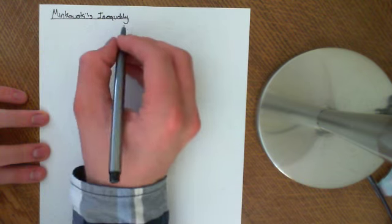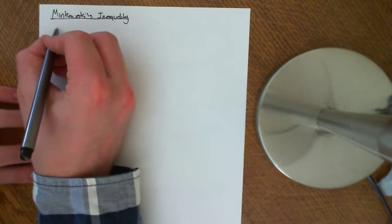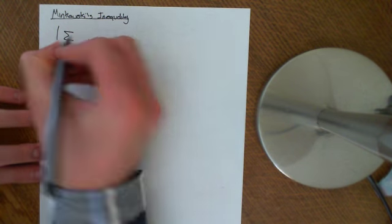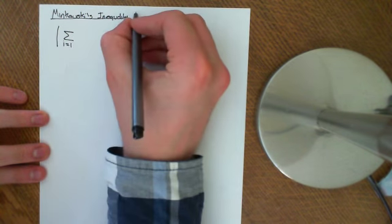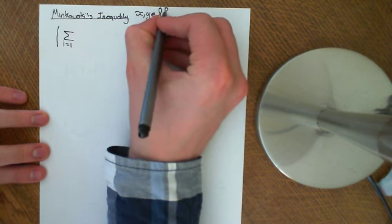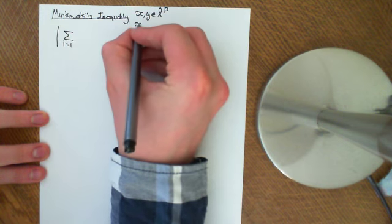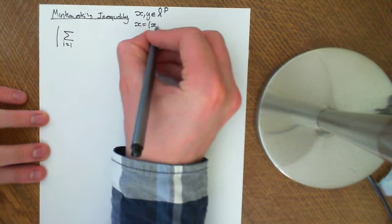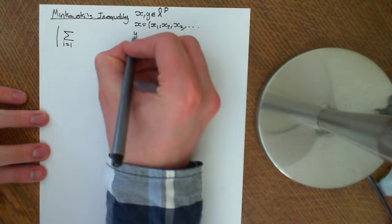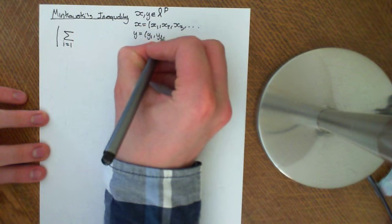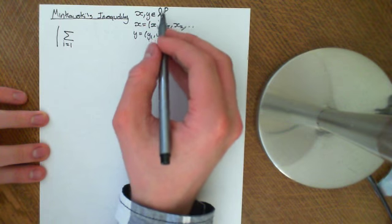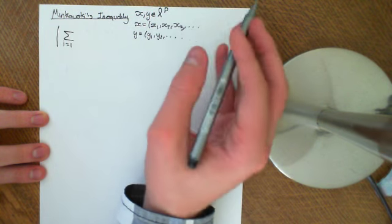So Minkowski's inequality states the following. First, let x and y both be elements of some LP space, where x equals the sequence x1, x2, x3, and so on, and y equals the sequence y1, y2, etc. These are elements of the LP space where p equals 1, 2, 3, 4, etc.